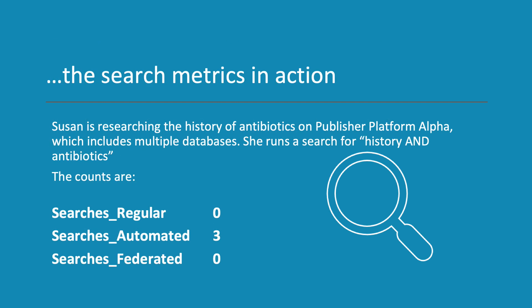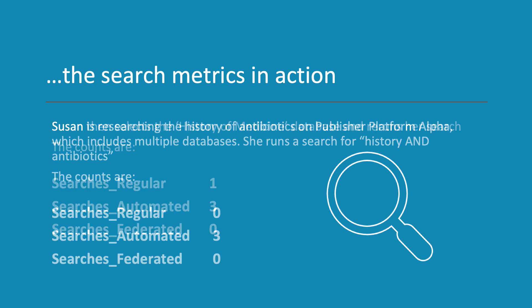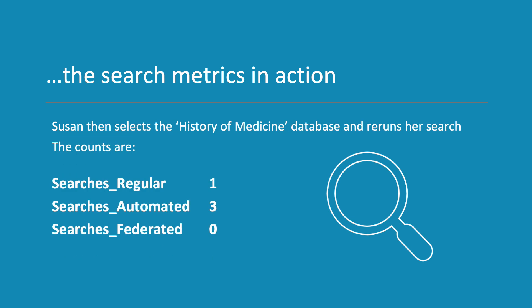Alternatively, if publisher platform Alpha included multiple databases and Susan searched for history and antibiotics, the counts would be searches regular 0, searches automated 1, searches platform 1, and searches federated 0. If Susan then selects the history of medicine database and reruns her search, the counts increment to show searches regular 1, searches automated 1, searches platform 2, and searches federated 0.